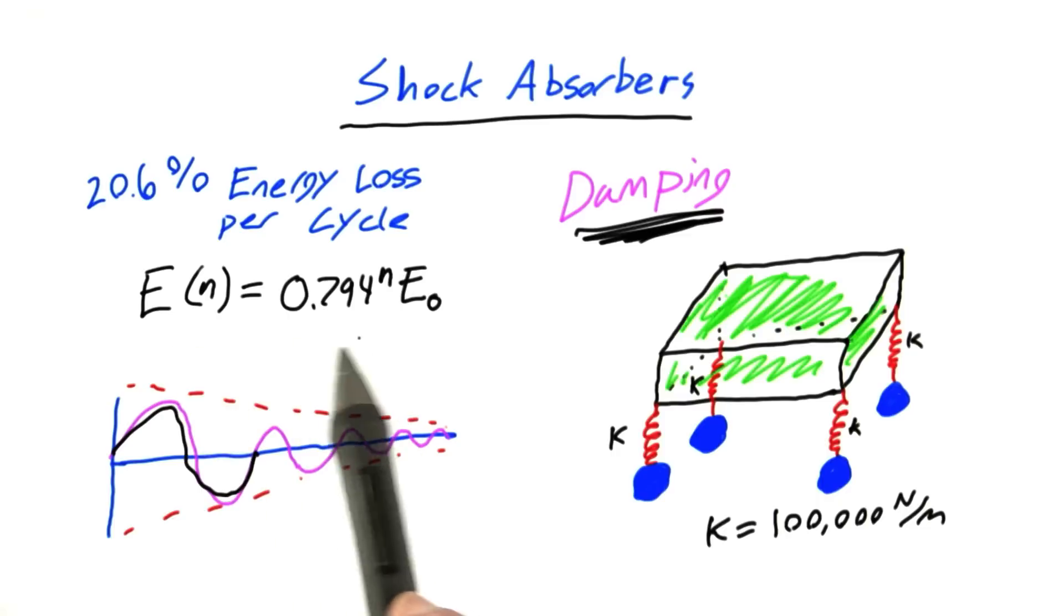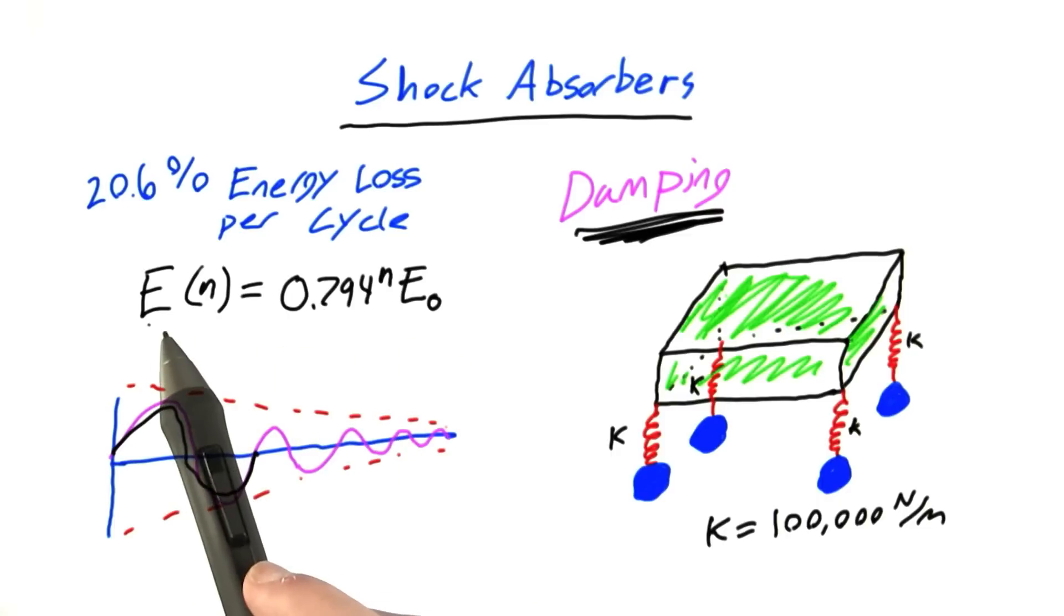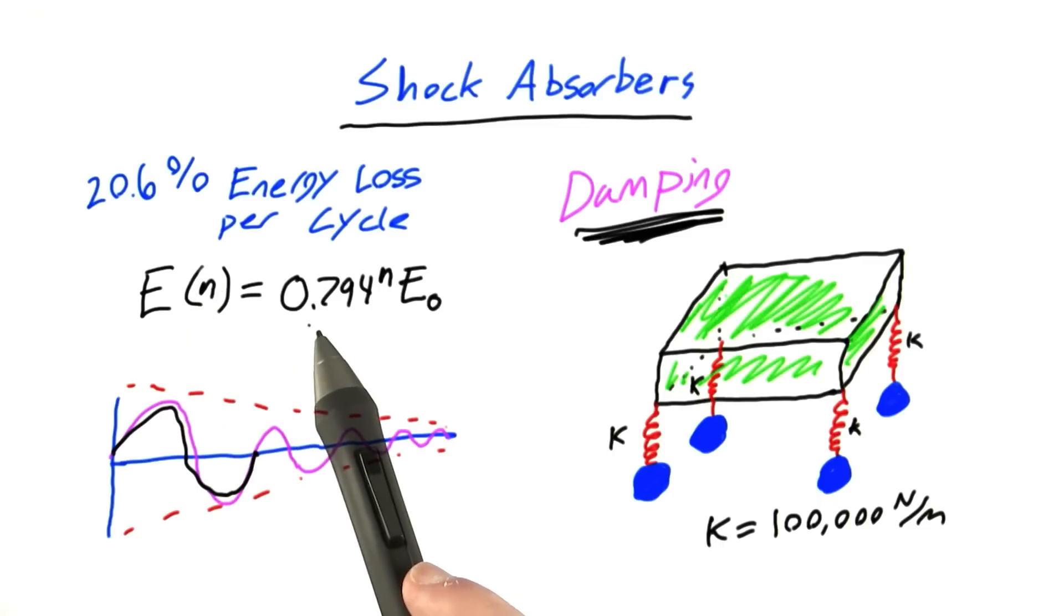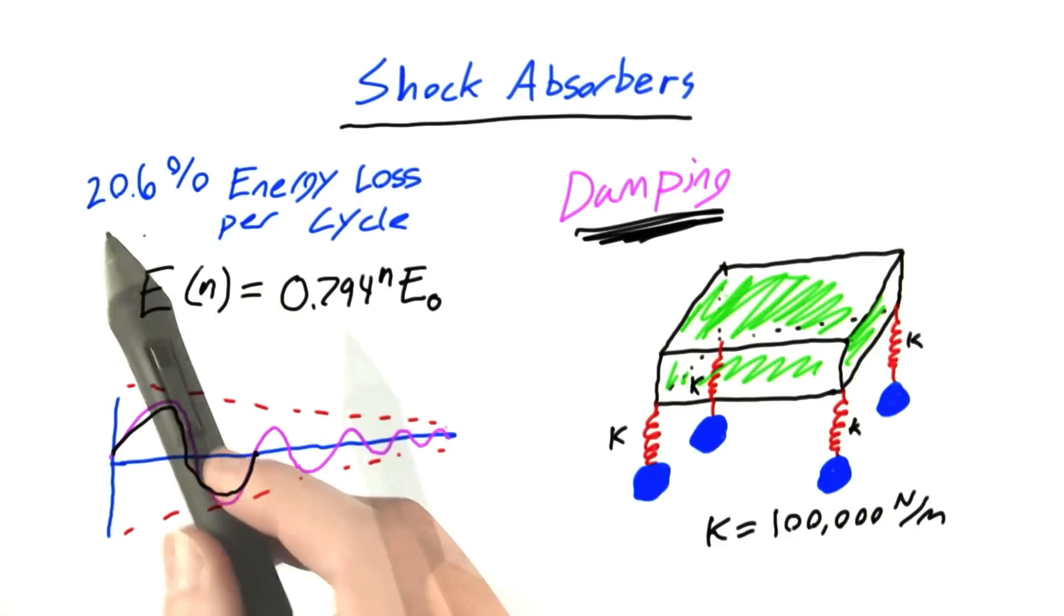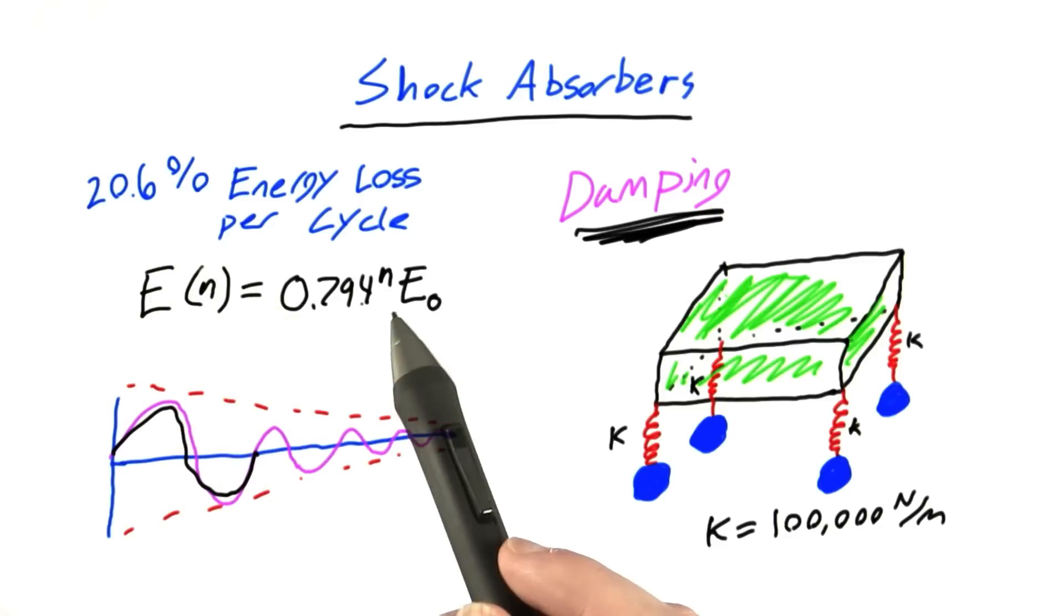Looking at this situation more mathematically, we get this equation: the energy of the oscillator after n cycles is equal to 0.794, which is 1 minus 20.6%, to the n times the initial energy, E0.